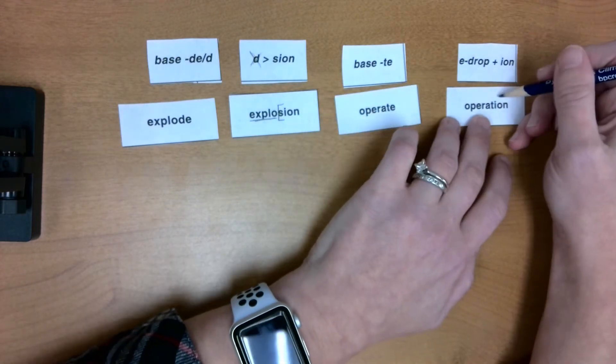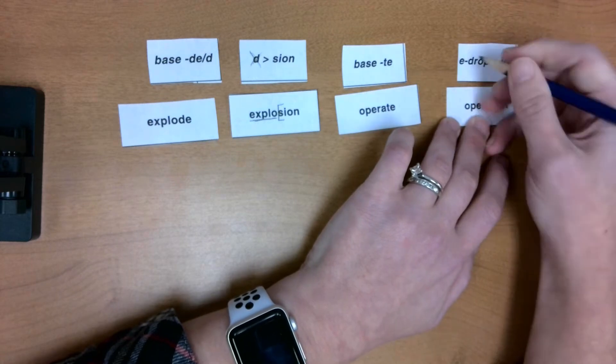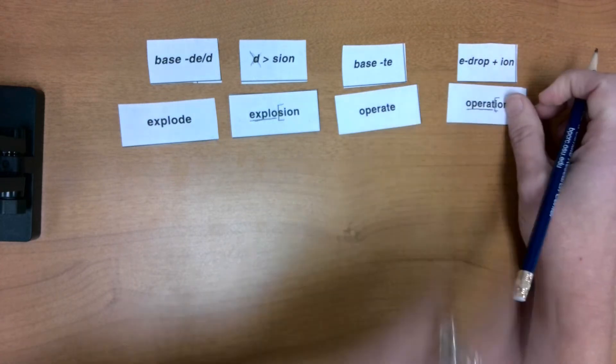So if I take a look right here and chop off that I-O-N suffix, I see my base word with that E drop.